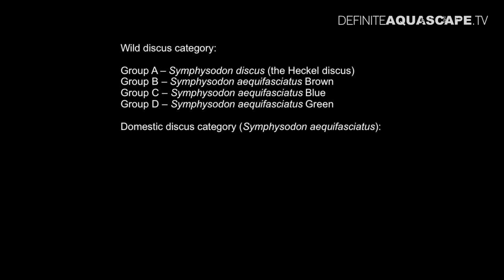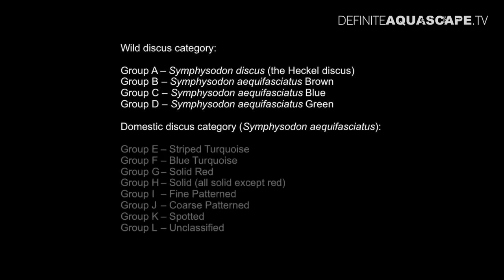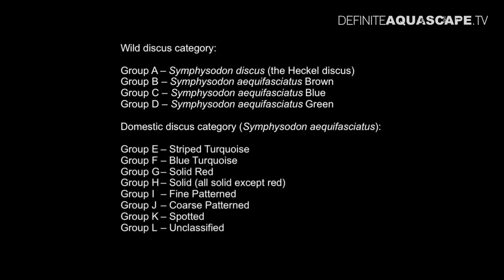And now the domestic discus category — there are more groups here. Group E is striped turquoise. Group F is blue turquoise. Group G is for solid red, which is red fish without any pattern. Group H is for all solid fish other than red. Group I is for fine patterned fish. Group J is for coarse patterned fish. Group K is for spotted fish. And group L is for all other fish which do not fit into the previous categories.